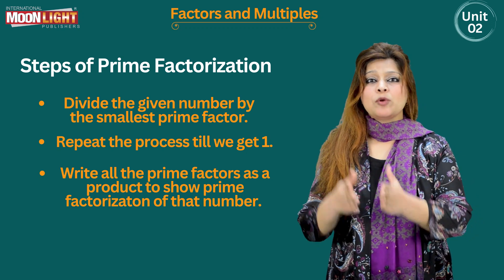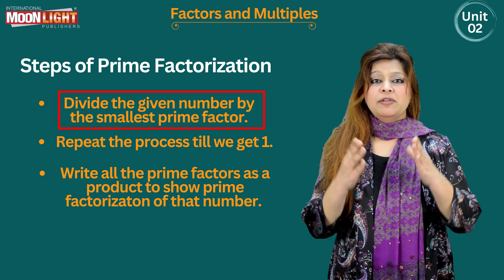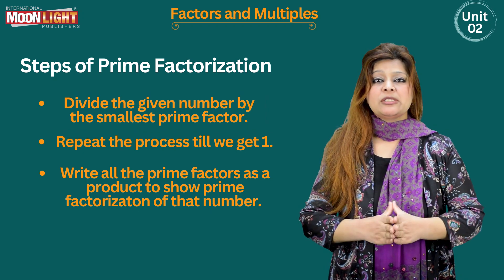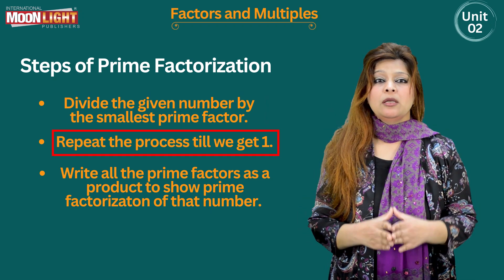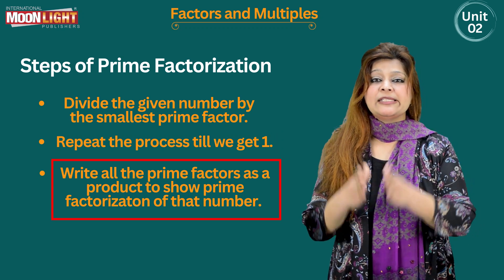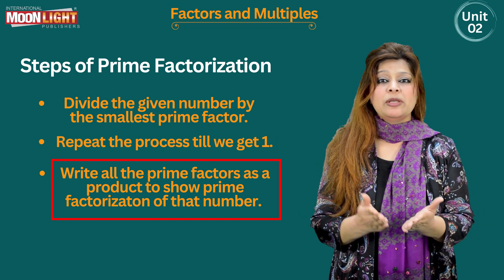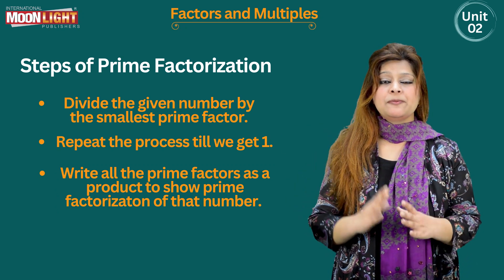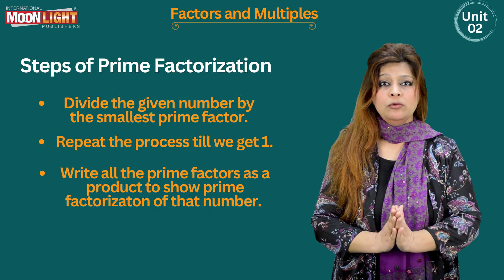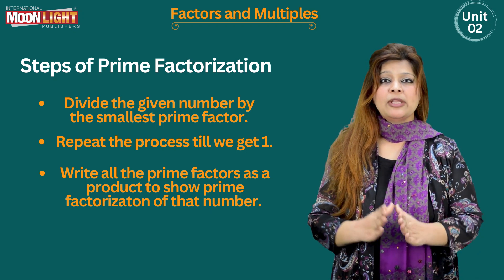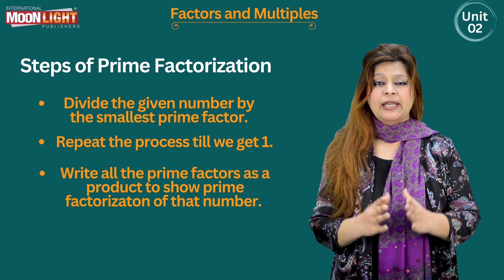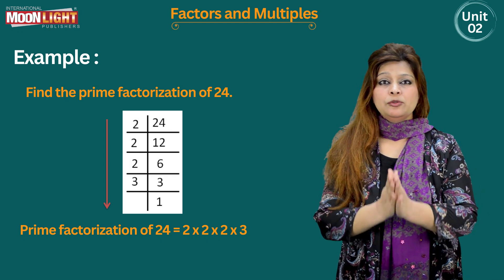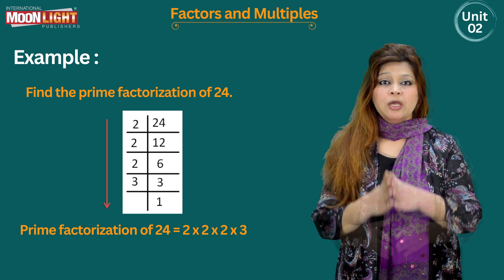Now I will tell you the steps of prime factorization. Step one: divide the given number by the smallest prime factor. Step two: repeat the process until we get the number one. Step three: write all the prime factors as a product to show the prime factorization of that number. Note these three steps down and remember them by heart.